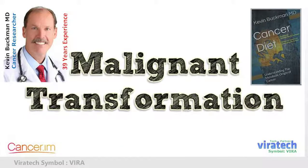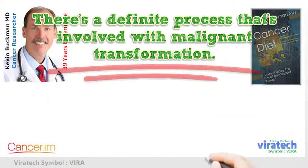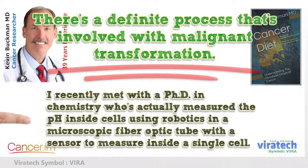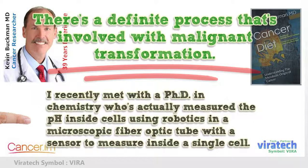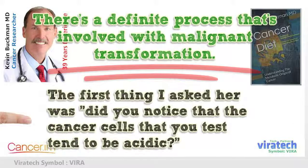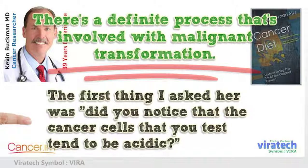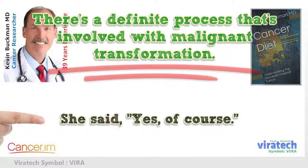Malignant Transformation. There's a definite process involved with malignant transformation. I recently met with a PhD in chemistry who has actually measured the pH inside cells, using robotics and a microscopic fiber optic tube with a sensor to measure inside a single cell. The first thing I asked her was whether the cancer cells she tested tended to be acidic. She said, yes, of course.